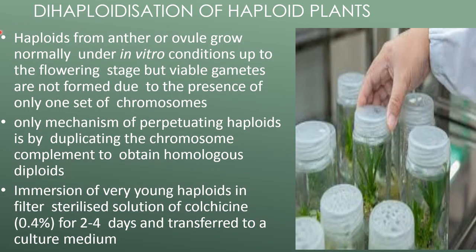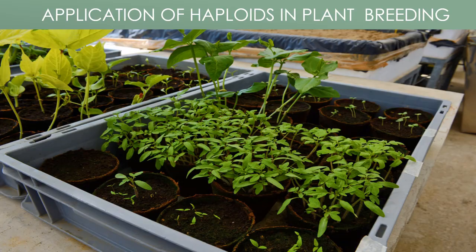Dihaploidization of haploid plants: haploids from anther or ovule culture grow normally under in vitro conditions up to the flowering stage, but viable gametes are not formed due to the presence of only one set of chromosomes. The only mechanism for perpetuating haploids is by duplicating the chromosome complement to obtain homologous diploids. This is achieved by immersion of very young haploid plants in a filtered sterilized solution of colchicine (approximately 0.4%) for two to four days, then transferring to culture medium.